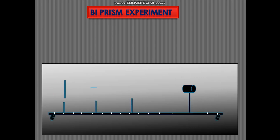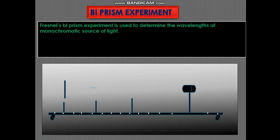Now let's see the biprism experiment. We have a slit source of light and the eyepiece placed at a large distance. The Fresnel's biprism experiment is used to determine the wavelength of monochromatic source of light.